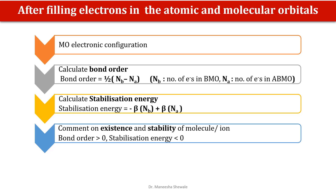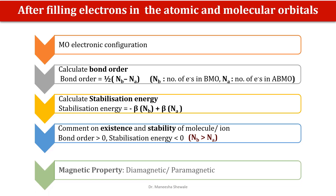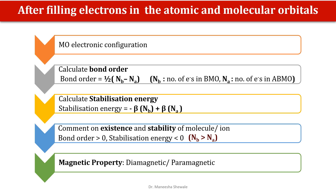When the bond order is greater than 0 and the stabilisation energy is less than 0, the molecule or ion will exist and it will be stable. This is observed when Nb is greater than Na. Finally, we can comment on the magnetic property. When there is no unpaired electron present, the molecule or ion will be diamagnetic. And if one or more unpaired electrons are present, the molecule or ion will be paramagnetic.